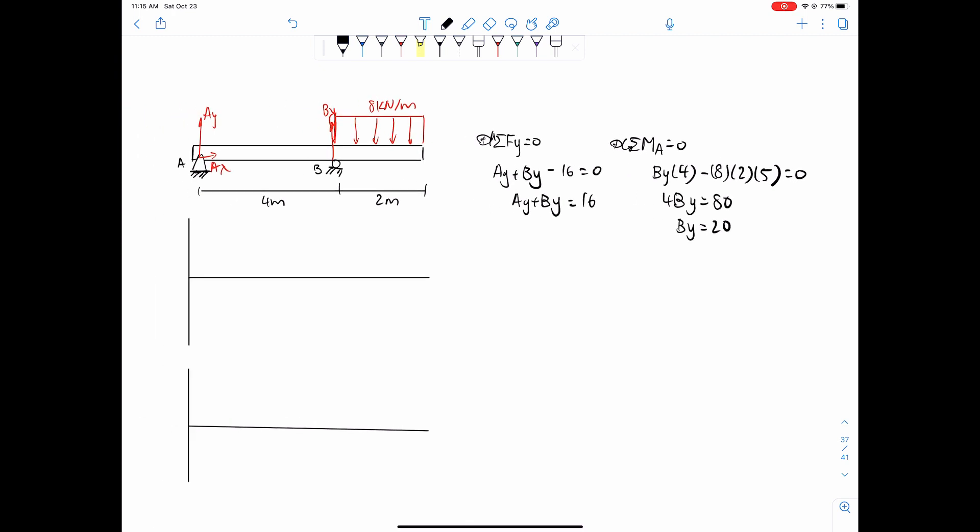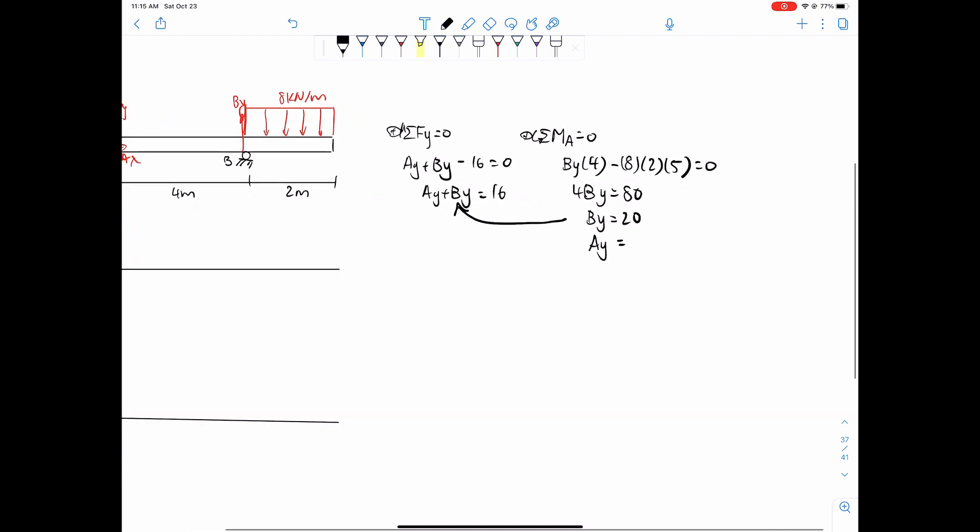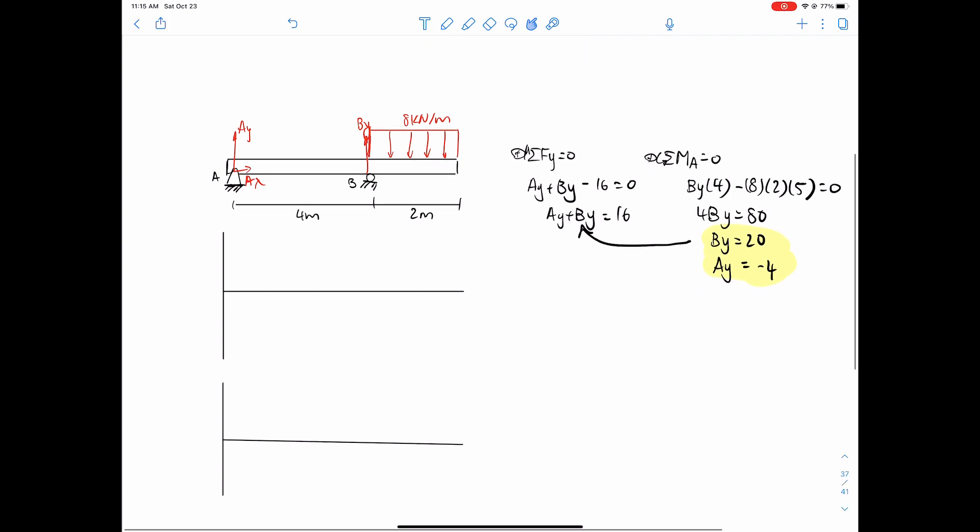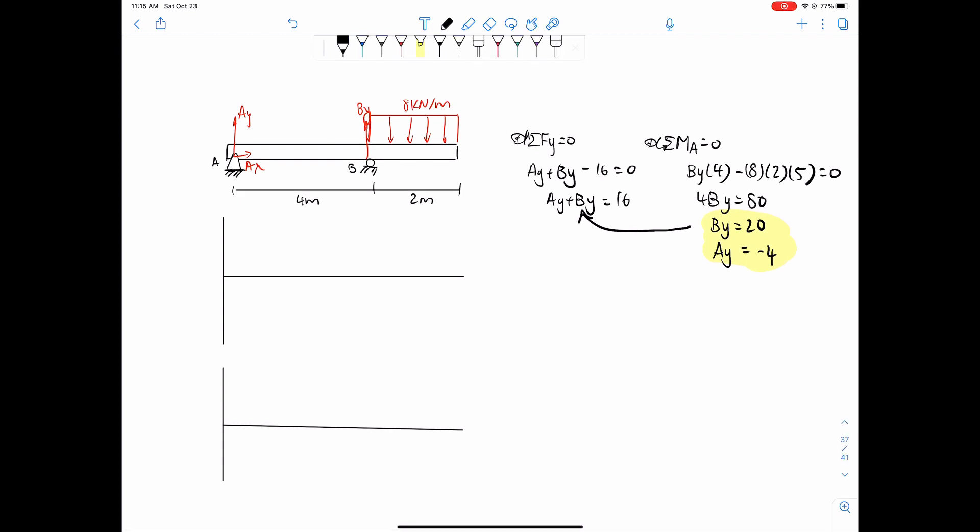So we can just simply solve for Ay now, plugging By back here. So something plus 20 equals 16, Ay equals negative 4. So these are your two reactions. Now for simplicity's sake, or you know what, something even better that we can do, we can just draw this arrow down. Once you've solved your reactions, all of them, to avoid confusion, you can reassign the directions of the arrows so that it visually makes more sense. So 4 kilonewtons going down, and then this equals 20 kilonewtons.